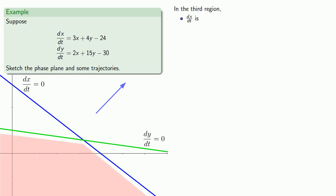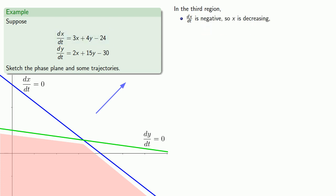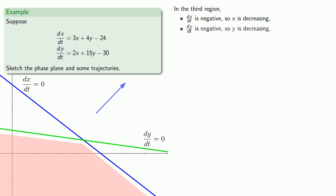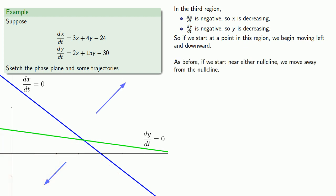In the third region, dx/dt is negative, so x is decreasing, and dy/dt is also negative, so y is also decreasing. If we start at a point in this region, we begin moving left and downward. We might draw a trajectory that looks like this. As before, if we start near either null cline, we move away from the null cline.